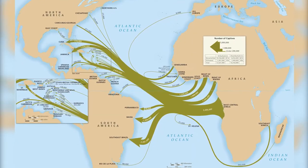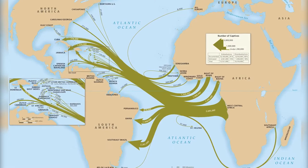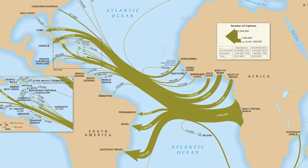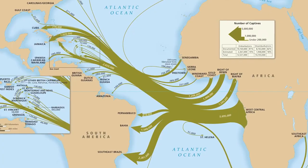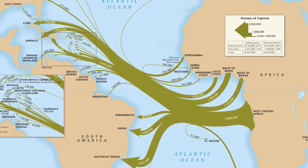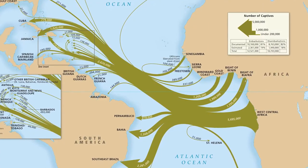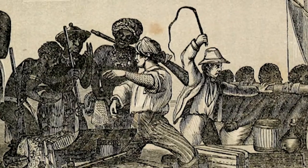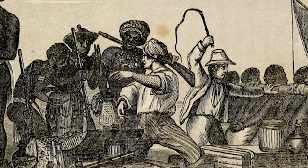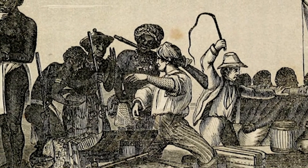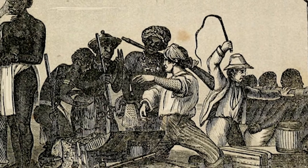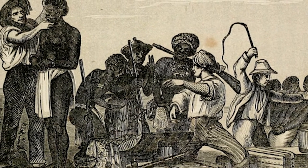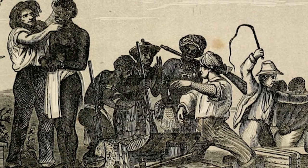Slaves were transported from West Africa across the Atlantic under inhumane conditions. Since this trip was the second of three trips in a usual European commerce journey, it was called the Middle Passage. Scholars estimate that one out of every five slaves died during the Middle Passage, and that twelve and a half million African people were taken from their homeland.